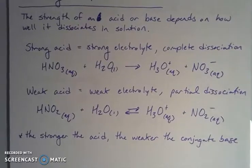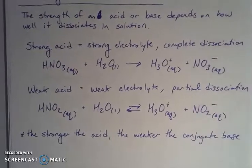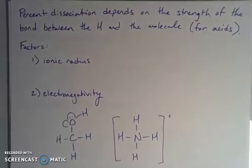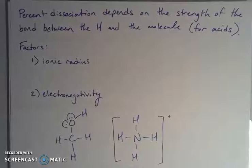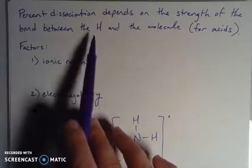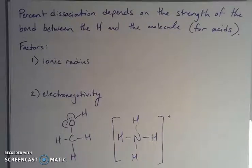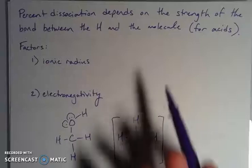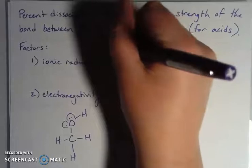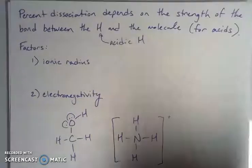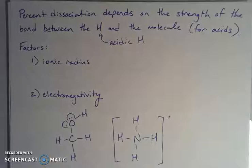Let's talk about some factors that influence how well these things dissociate in solution. I'm focusing on acids because we already talked about bases in general terms. Percent dissociation depends on the strength of the bond between the hydrogen that is being donated into solution - the acidic hydrogen - and the molecule that it's attached to. We can identify which one is going to leave the structure based on information from the Lewis dot structure and what we know about bond strength.